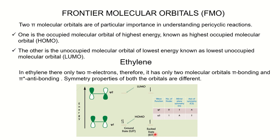For photochemical reactions — which occur from the excited state — one electron from psi 1 transitions to psi 2. Now in the excited state, the HOMO is psi 2 and LUMO is also psi 2 for ethylene under photochemical conditions.